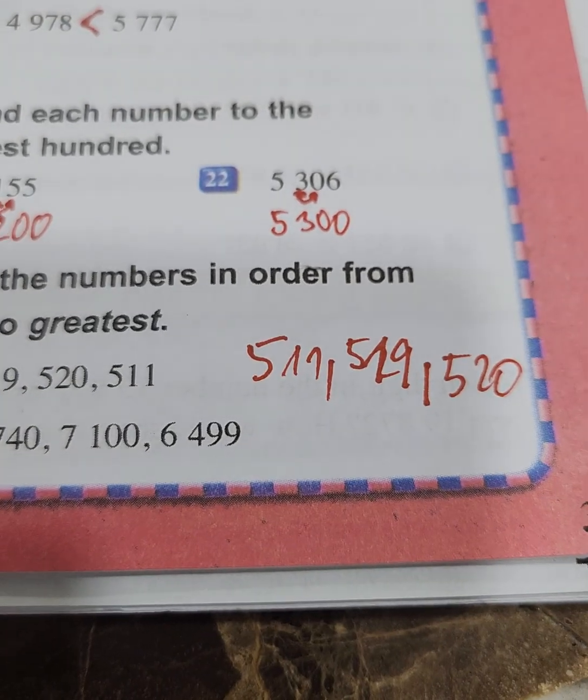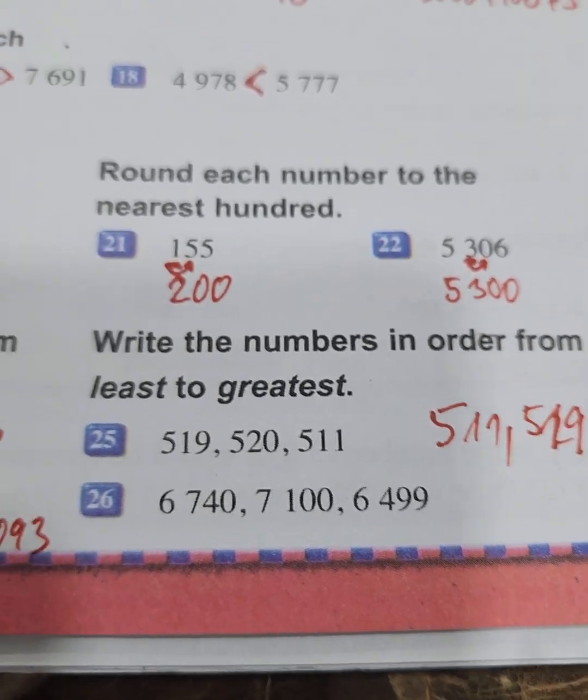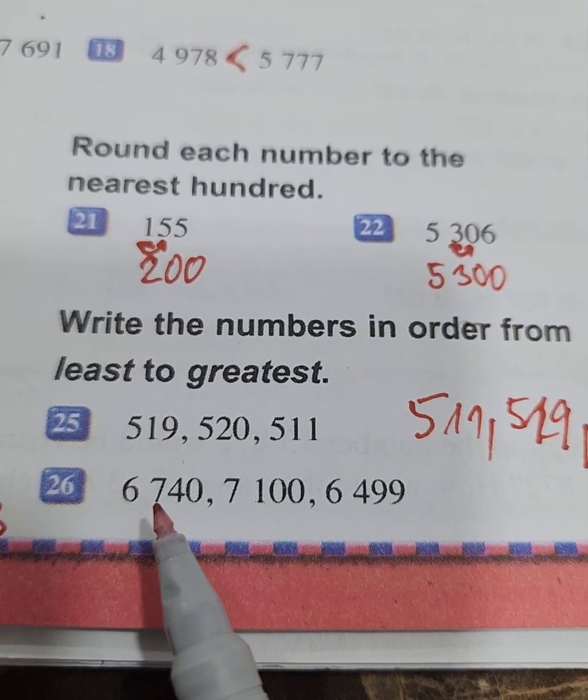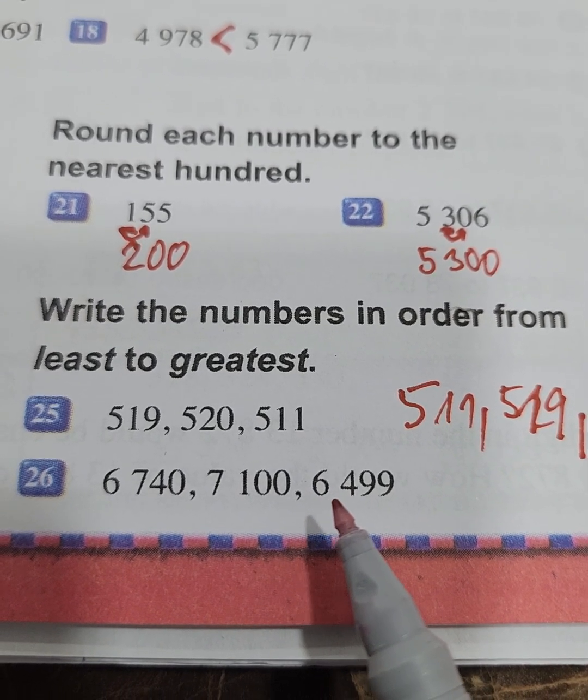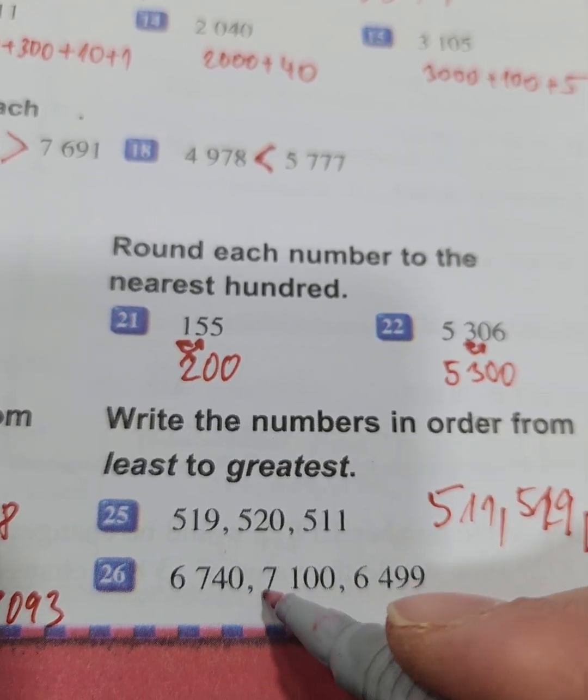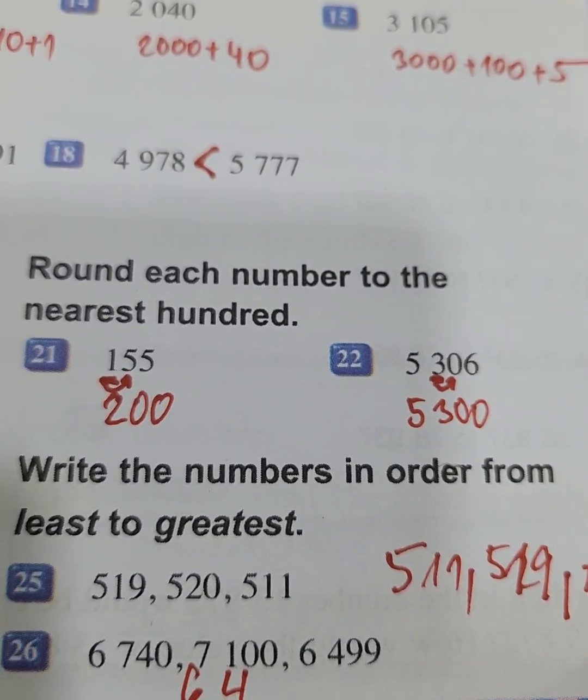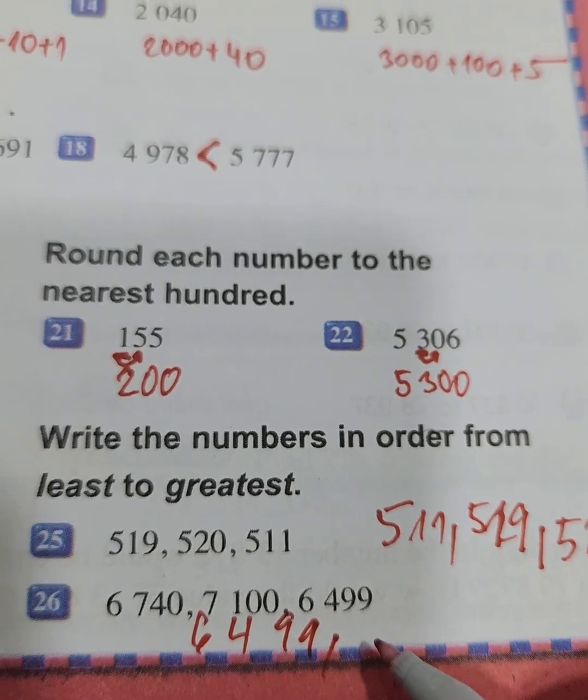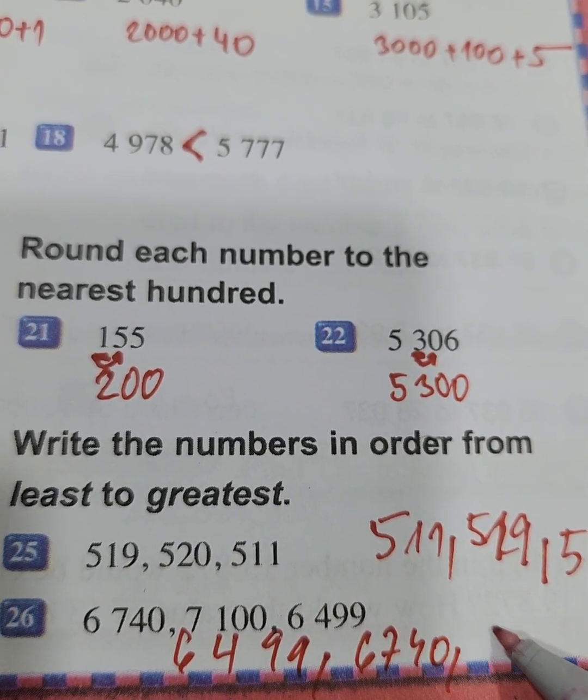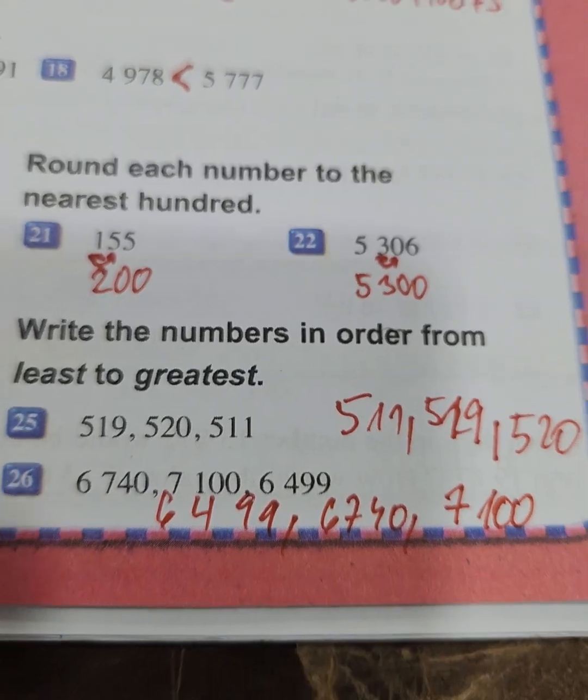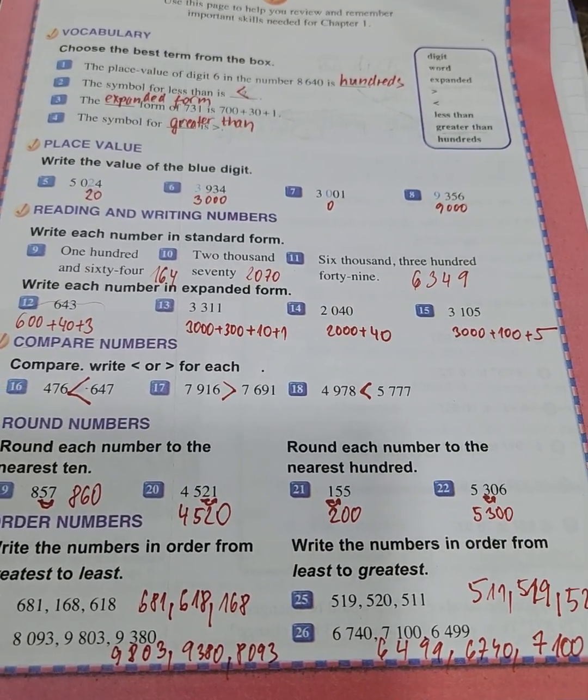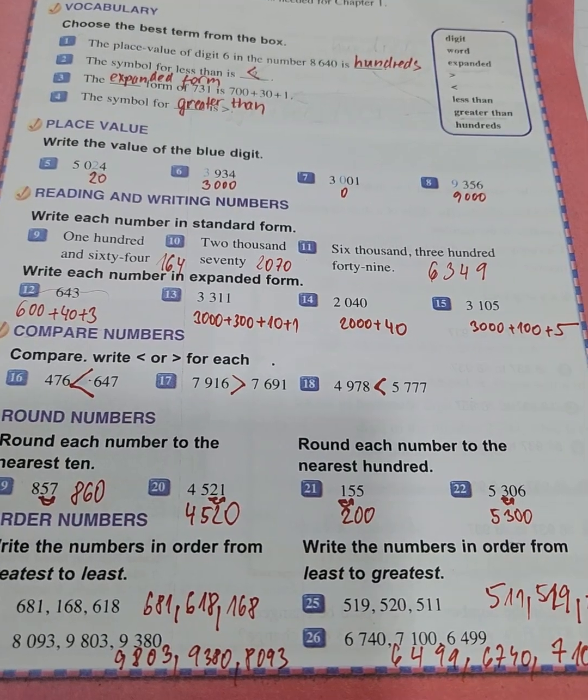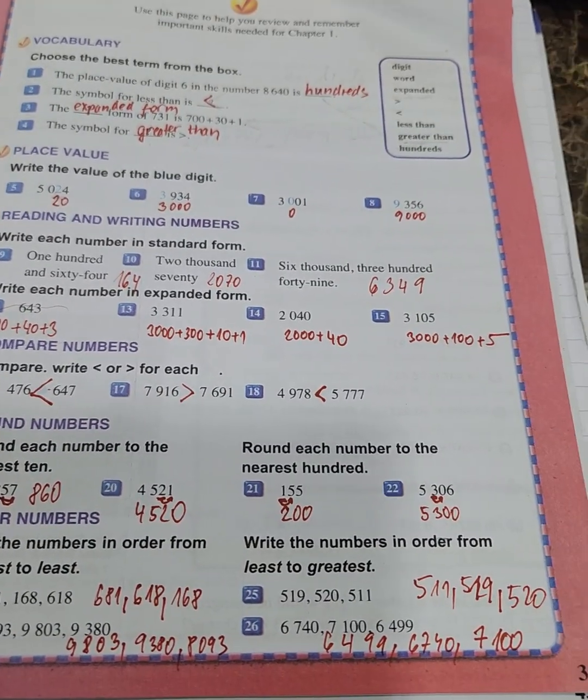And the last, we have 6740, 7100, and 6499. The least is 6499, then 6740, and the greatest is 7100. I hope it was clear for you. Please make it alone too. We will see and hear each other next time. Bye everyone. It was page number 3.